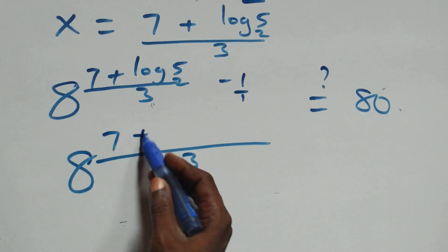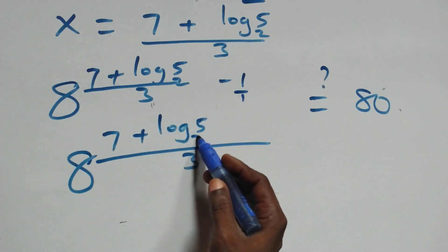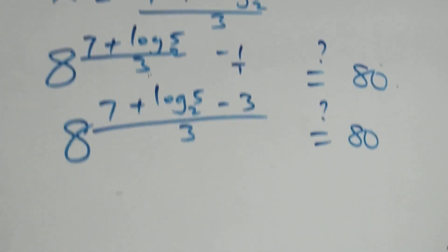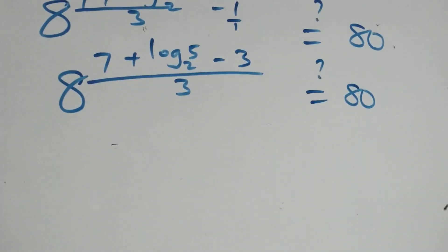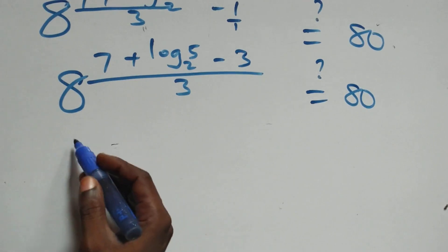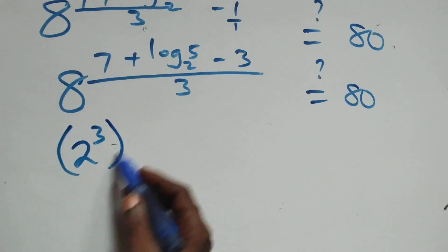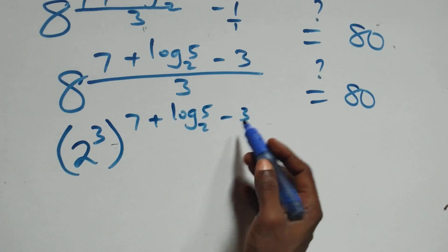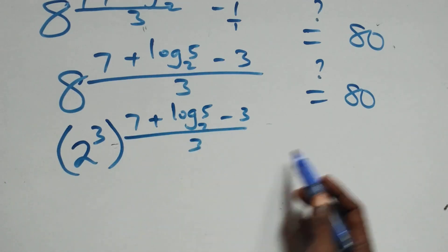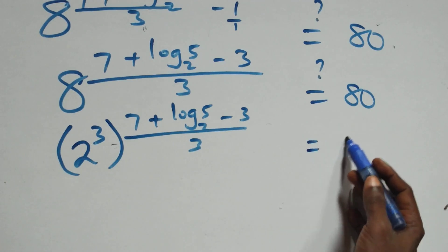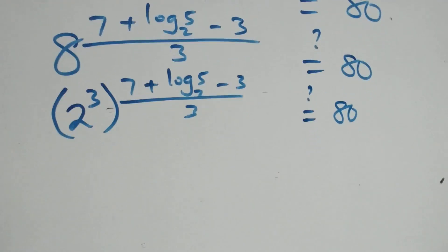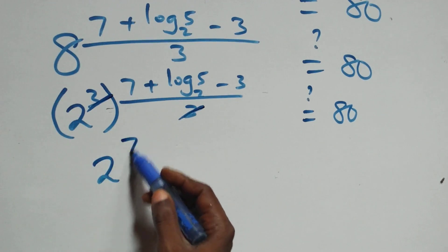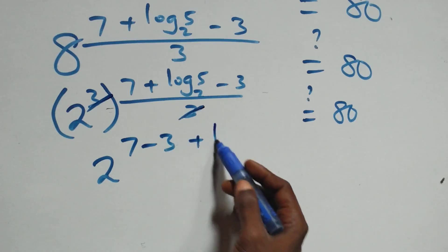So we have 2 raised to power 3 times (7 + log₂5)/3, minus 3, equals 80 on this side. The 3 in numerator and denominator cancel each other, giving 2 raised to power (7 + log₂5 − 3) equals 80.